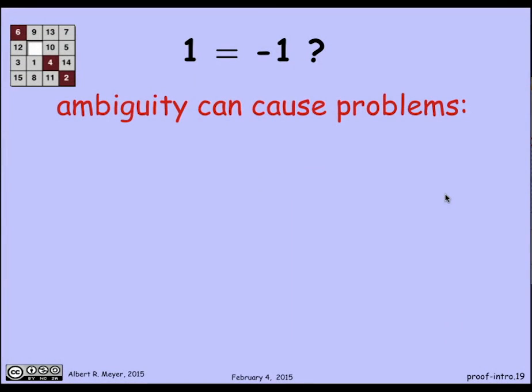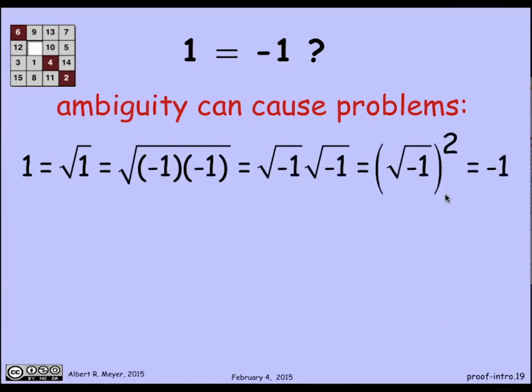When there's ambiguity, I can do things like proving easily that 1 is equal to minus 1. Here's the proof. And I will let you contemplate that and try to figure out just where in this reasoning that step by step seems pretty reasonable. But nevertheless, I've concluded that 1 is equal to minus 1, which is absurd. It's taking advantage of the fact that you don't know whether the square root of minus 1 means i or minus i.